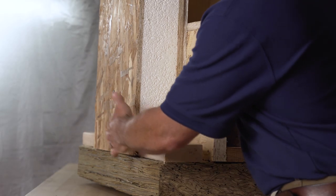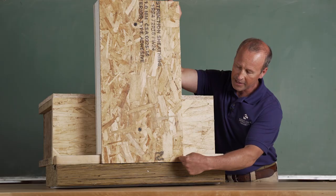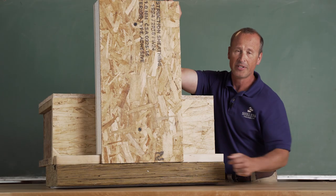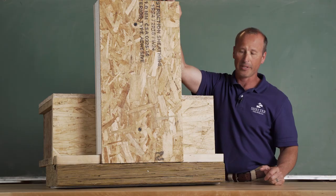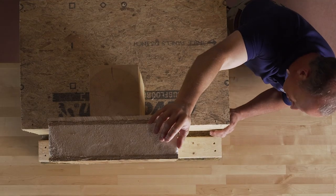And then the final attachment is from the SIP into the shoe. Once again we just nail that every six inches all the way around the perimeter of the building. This is not a structural detail but an air sealing detail.